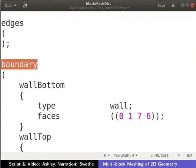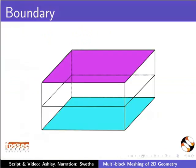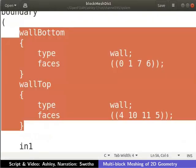Let us label the boundary patches now. The bottom and top faces are shown in the figure. We shall name them wall bottom and wall top respectively. Each face resembles the characteristics of a solid wall. Hence, the face is of the type wall. The two faces are defined as shown.